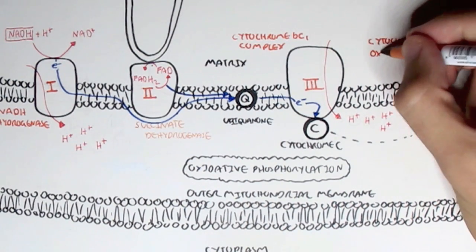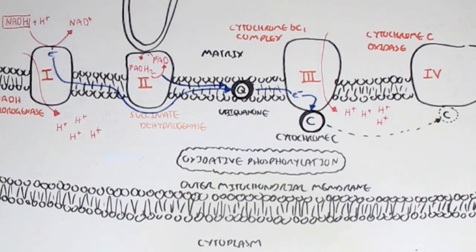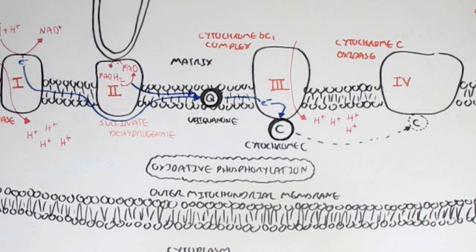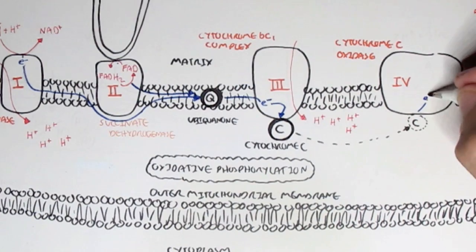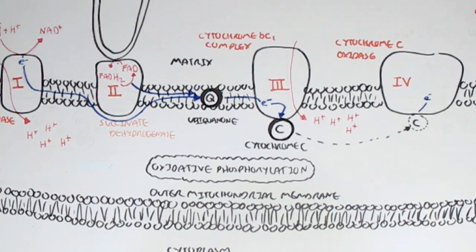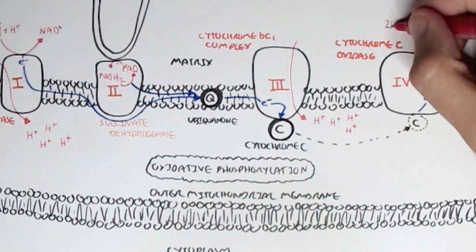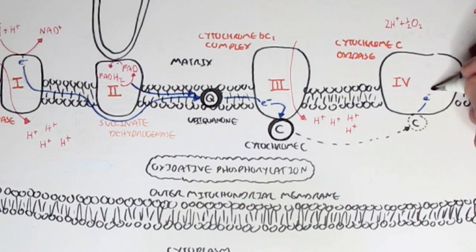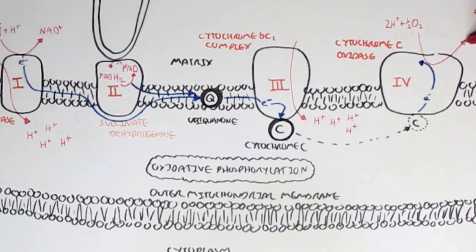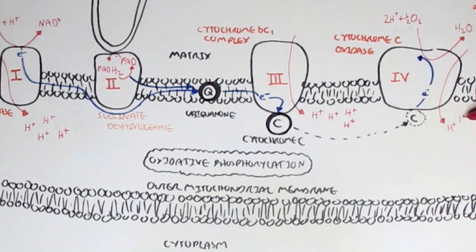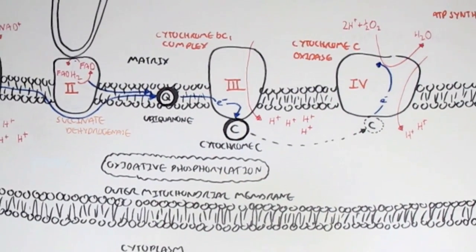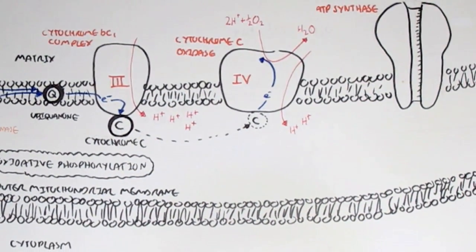Cytochrome C gives the electrons to complex four, known as cytochrome C oxidase. Here the electrons will make water from oxygen essentially. The electrons from NADH will help reduce 2 hydrogen ions and half an oxygen gas — which is essentially 1 oxygen molecule — to form 1 H2O, 1 water. Also during this process, complex four will pump 2 hydrogen ions as well.